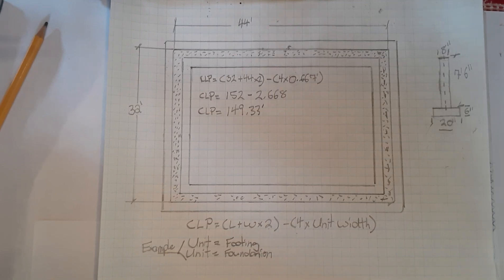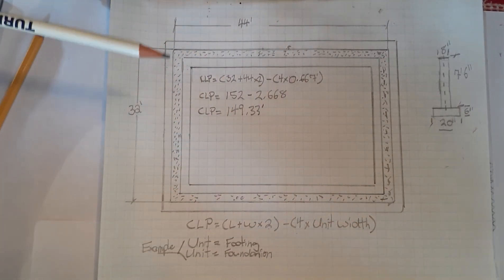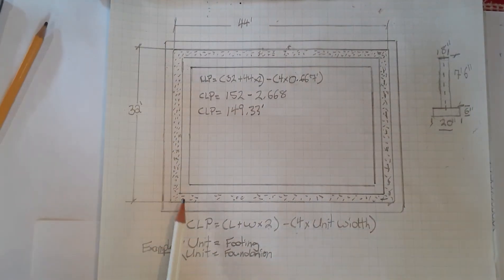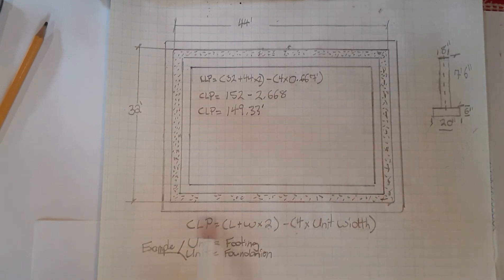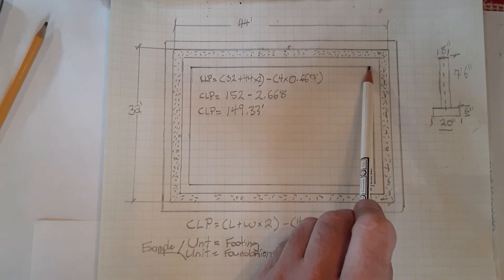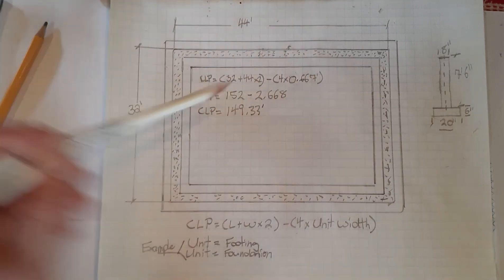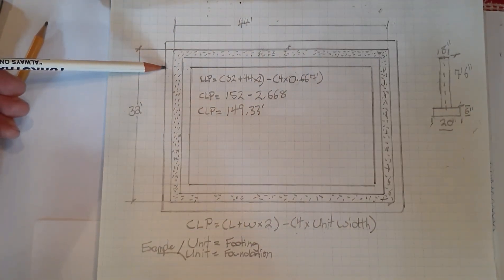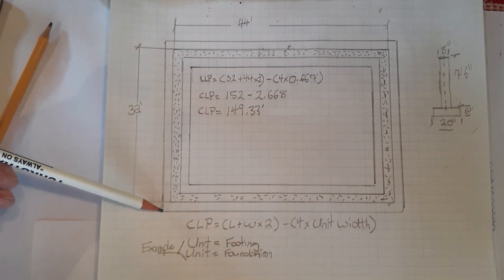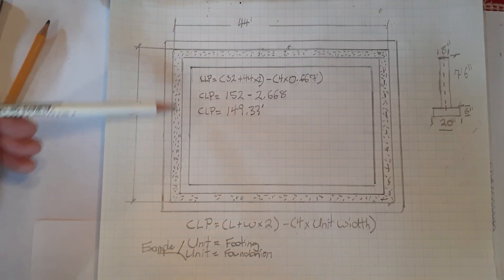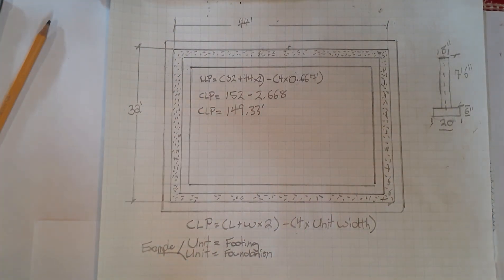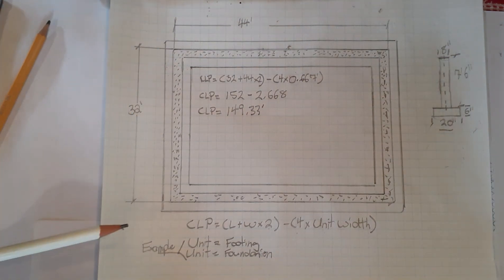The first thing you're going to have to do is figure out how much form material and how much concrete you need to put the footings in. The way we did it in the last class, we broke it into four rectangles — we figured out volume for two long rectangles then subtracted the foundation width from each end to get the two small end rectangles. That's quite a few steps, whereas with centerline perimeter we can knock it down to a two-step process.